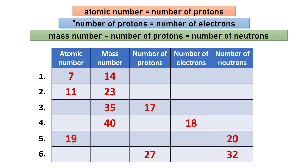For number one, the atomic number is 7 and the mass number is 14. Since the atomic number equals the number of protons, number one has 7 protons. Since the atom is neutral, the number of electrons is also 7. To get the number of neutrons, we subtract the number of protons from the mass number: 14 minus 7 equals 7 neutrons.